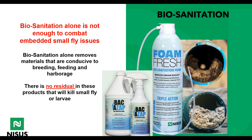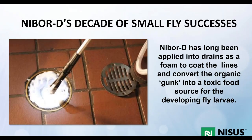So where's the residual — the gift that keeps on giving? It's Nibor-D, and Nibor-D has a decade of small fly successes. Through drain foaming, we've been coating the lines and converting that organic gunk into a toxic food source for developing fly larvae. It leaves a borate-laden residue on these breeding materials. This is a proven tank mixing protocol. It does require foaming and some scheduling considerations — applications before or after hours.